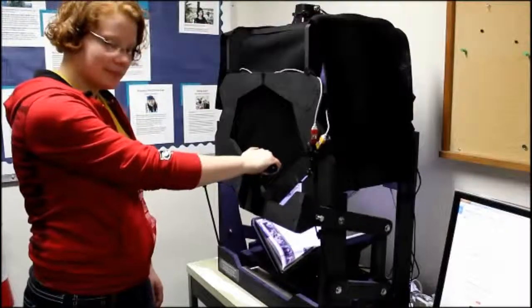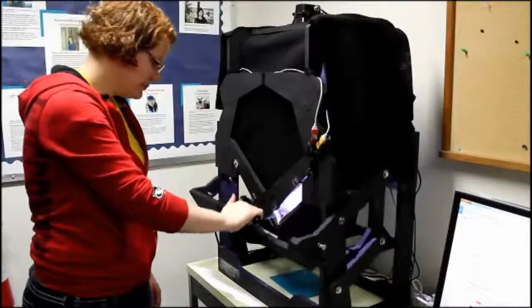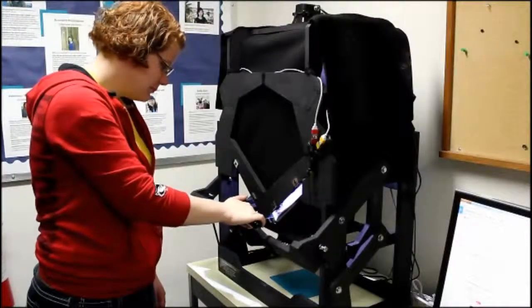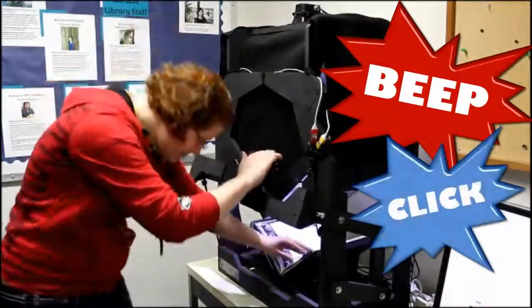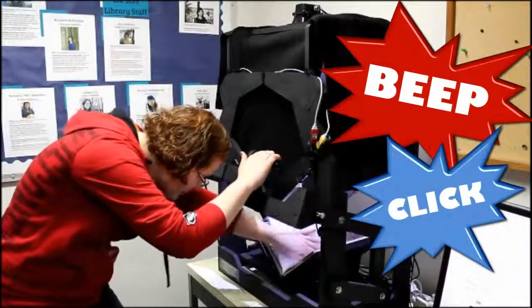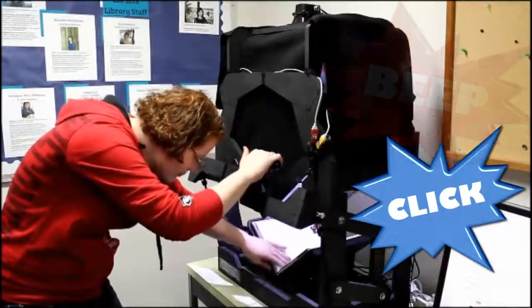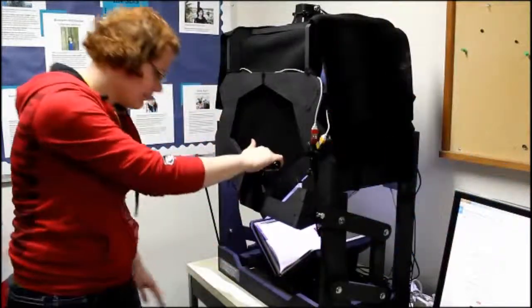To operate the book scanner, gently pull down the handle until the book pages are touching the glass panel. Click the trigger. You should hear both cameras, either simultaneously or in succession, make a beep. Gently raise the handle, turn the book page, and repeat.